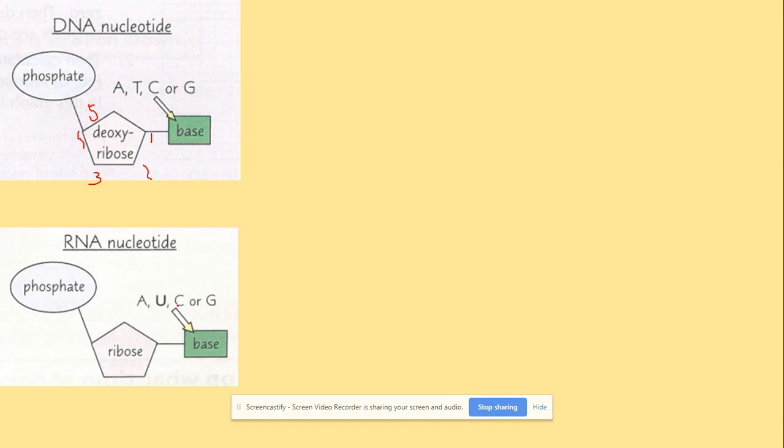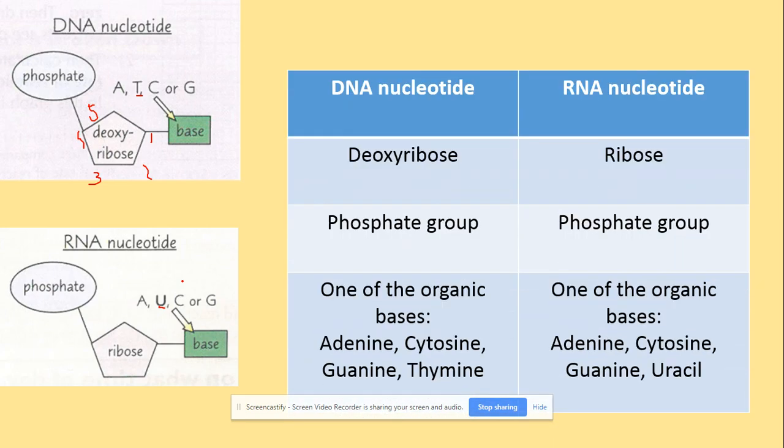Also there's a difference in the nitrogen-containing bases. The difference is between thymine in DNA and uracil base in RNA. Those are the main differences you should be aware of, and of course both contain the phosphate group so there is no change to that.